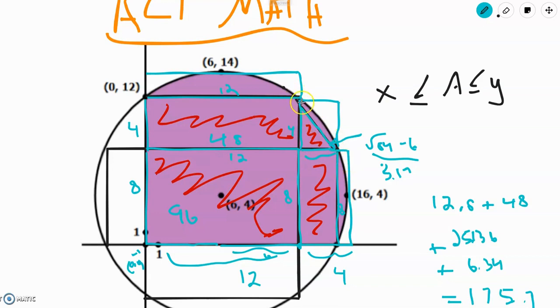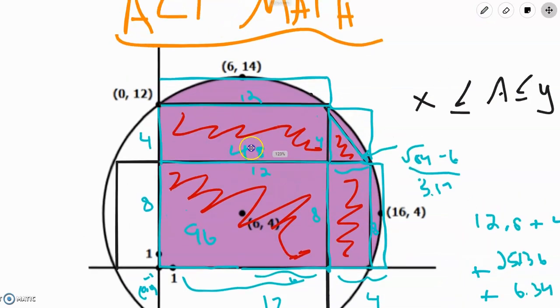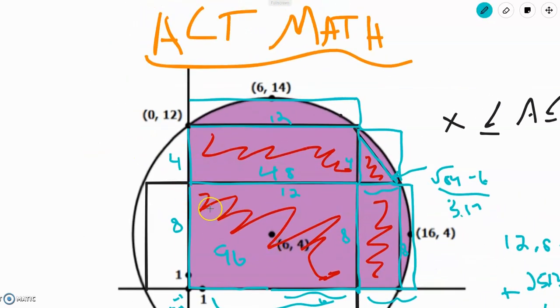So this new length goes from x equals 12 to x equals 16. So this is 4. This is still 8, since we just extended the rectangle. This triangle, this stays at the square root of 84 minus 6. So we're just making this triangle like a square, so its area essentially gets doubled. So we'll just keep this as 3.17 and this is 4.